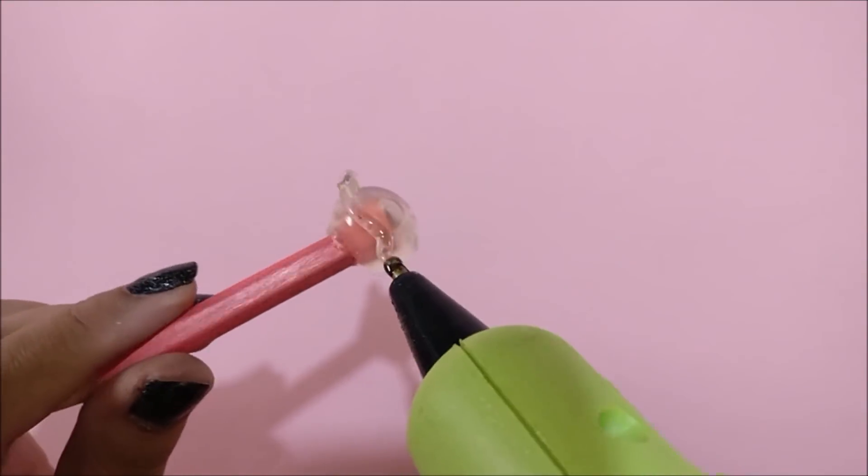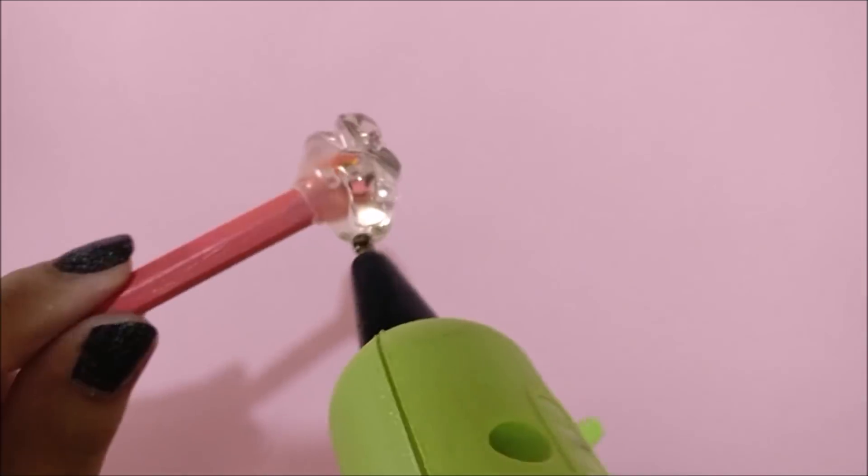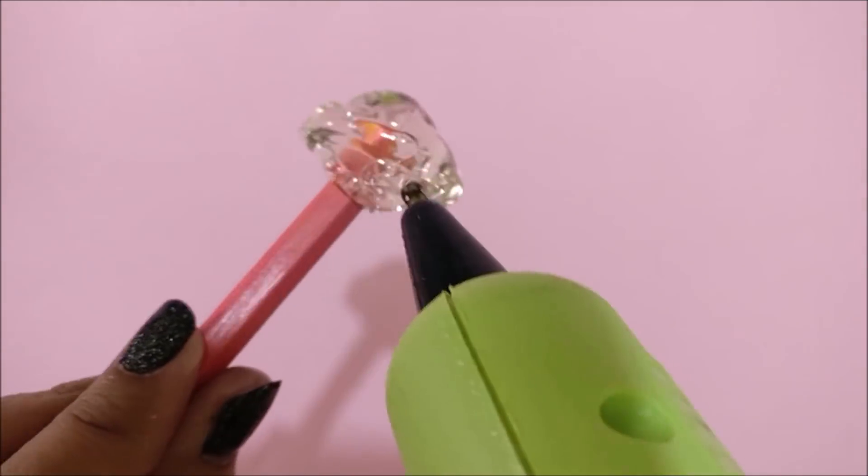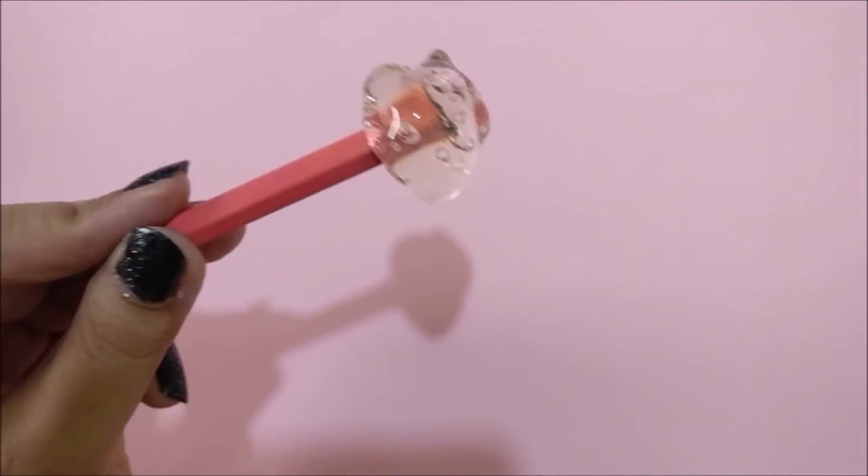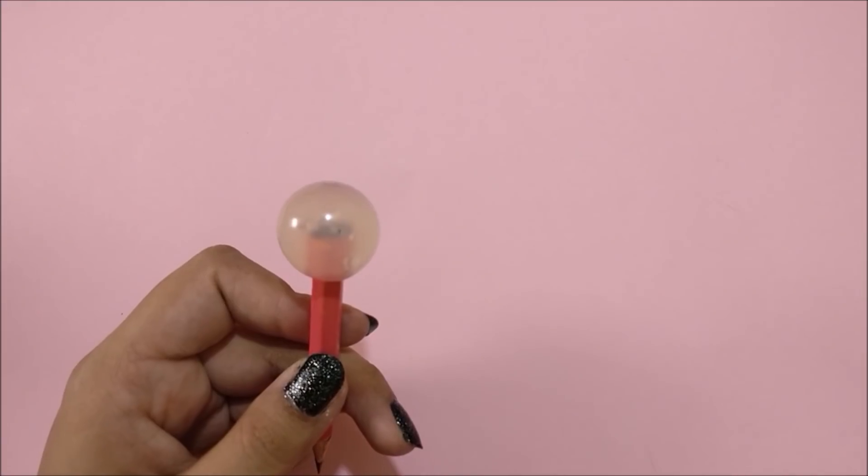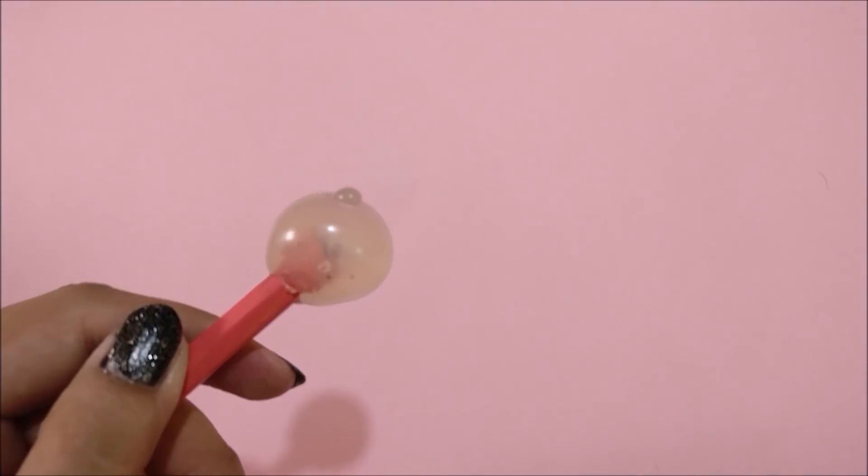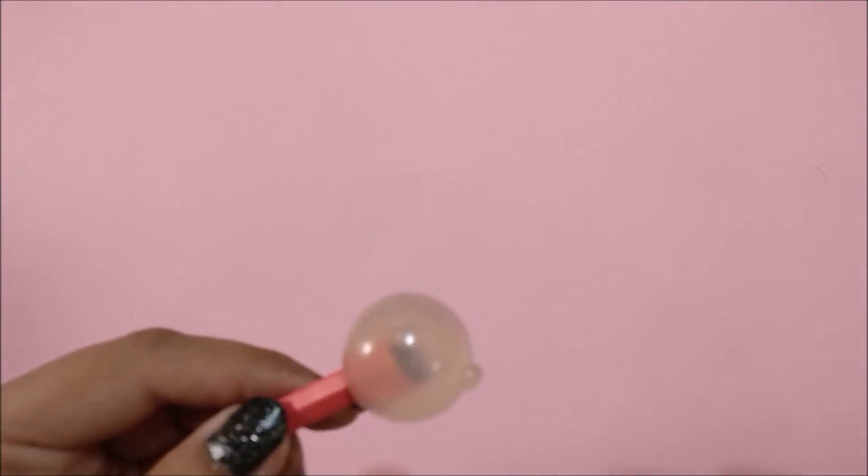This process will help to form a perfect circular round shape. After drying, add the third and last layer of hot glue. Then again rotate the pencil continuously. And after drying, you will end up with the perfect round shape. Then add two little dots of hot glue to make the ears for the bear and let it dry.